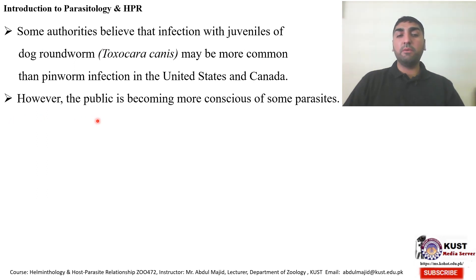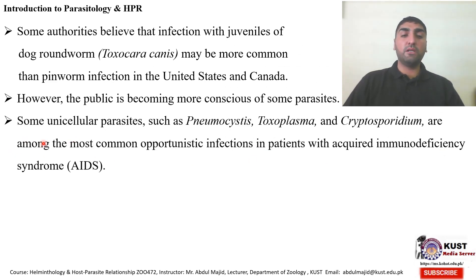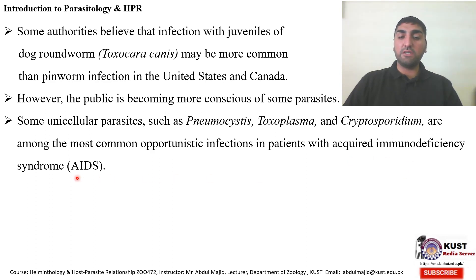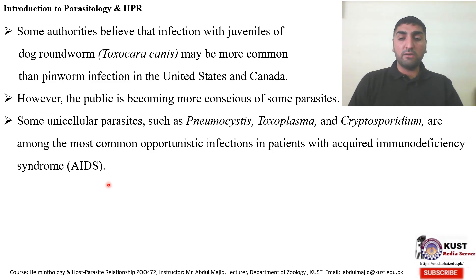However, the public is becoming more conscious of some parasites. For example, there are some unicellular parasites such as Pneumocystis, Toxoplasma gondii, and Cryptosporidium. These are among the most common opportunistic infections in patients with acquired immunodeficiency syndrome. Not only in AIDS — there are certain other reasons for immunosuppression, such as organ transplants or prolonged steroid therapy.